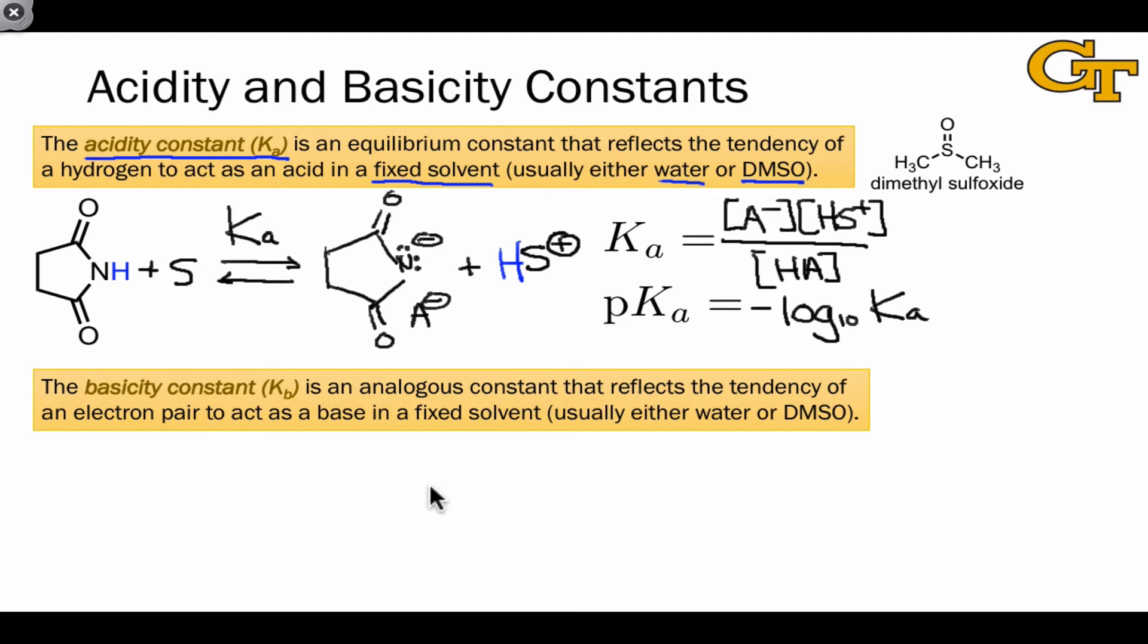The basicity constant is analogous, but reflects the tendency of an electron pair to act as a base. Kb isn't just the inverse of Ka, because we're again using a fixed solvent, and so the reaction associated with Kb still involves the reaction of the solvent with the molecule of interest. But now, we think of the solvent as having a proton that gets donated to the basic lone pair. Notice, as a brief aside, the DMSO, like water, has protons that can be removed by basic groups. It's amphiprotic, just like water.